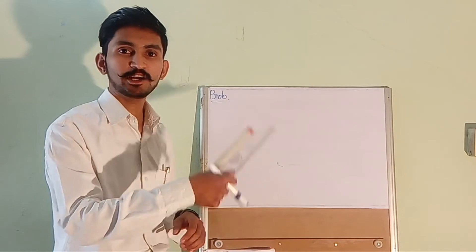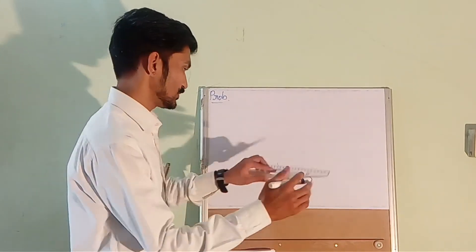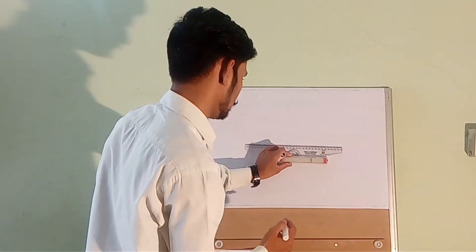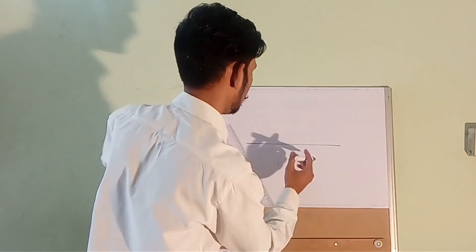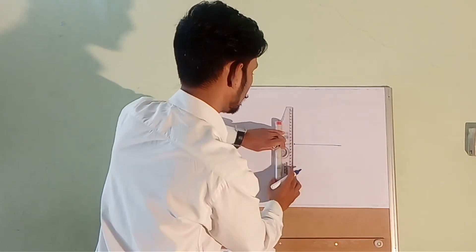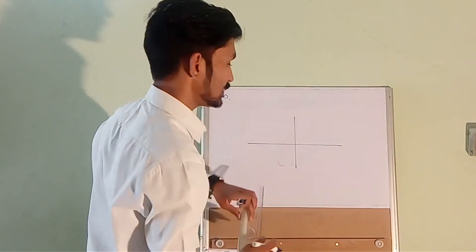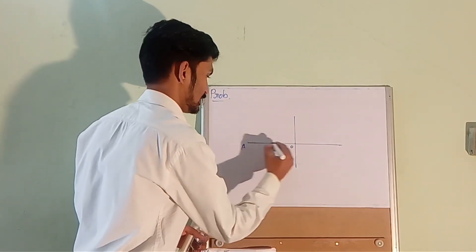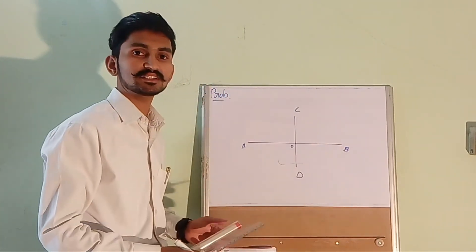Draw the major axis and minor axis bisecting each other at a right angle at point O. The major axis AB is 150 mm long and the minor axis CD is 100 mm long. They bisect each other at point O.